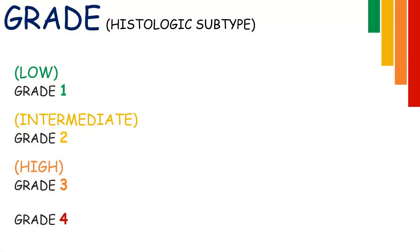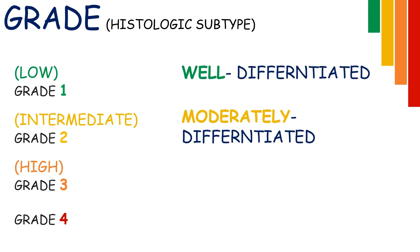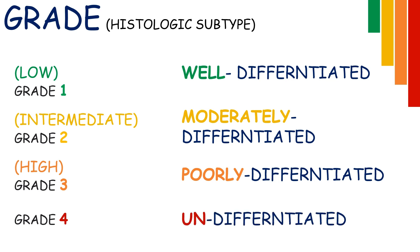When viewed microscopically, grade 1 shows well differentiated cells while grade 2 will have moderately differentiated cells. In grade 3, poorly differentiated cells will be observed, while in grade 4 there will be a majority of undifferentiated cells.